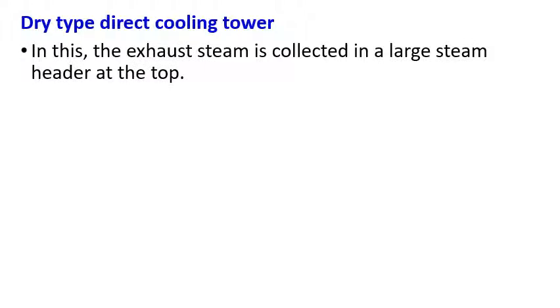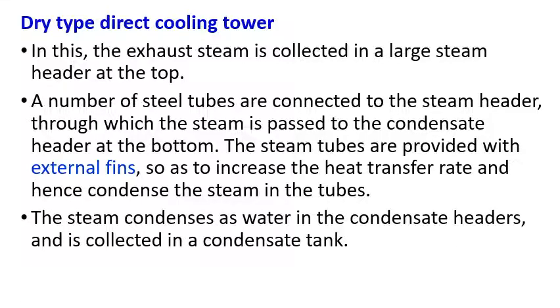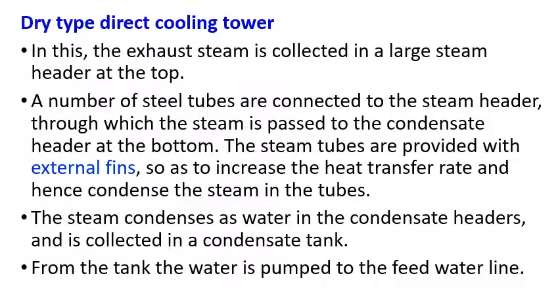In the direct type dry cooling tower, the steam is collected in a large steam header at the top. Steam tubes are provided with external fins to enhance heat transfer, and the steam condenses into water in a condensate header, which is collected in a condensate tank. The direct type requires less water compared to wet cooling towers. Water from the tank is then pumped to the feed water line.